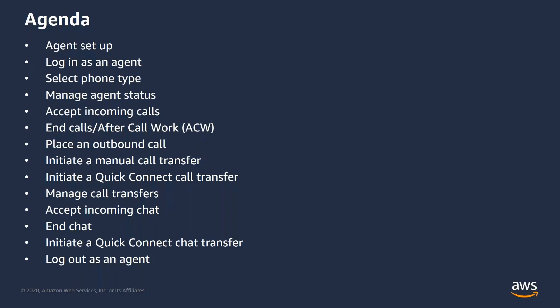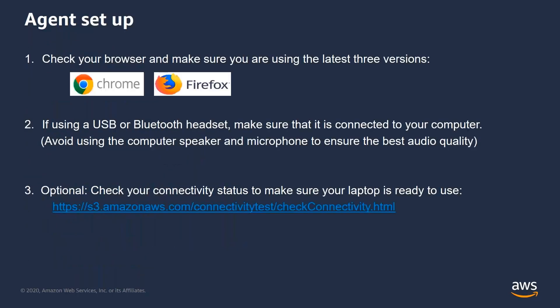With that said, let's start with the agent setup. Before you log into the CCP, check your browser and make sure you're either using one of the three latest versions of Chrome or Firefox. If using a USB or Bluetooth headset, make sure that it is connected to your computer. Avoid using the computer on speaker to ensure the best audio quality. A USB headset is always recommended. Optionally, you can also check if your laptop is ready by using the Amazon Connect connectivity tool.